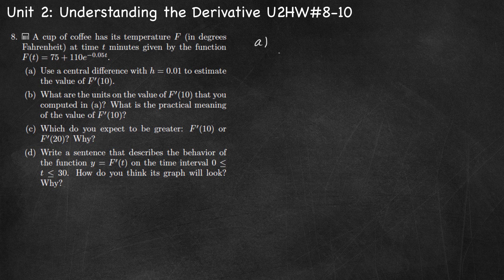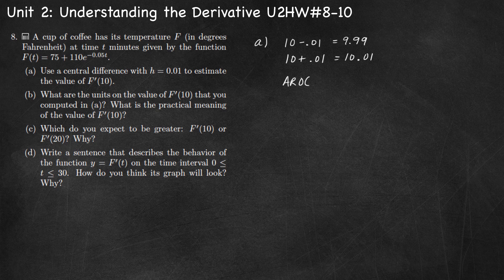To make this a good estimate, we want to choose two points that are really close to 10, so that our average rate of change is approximately equal to our instantaneous rate of change. How close do we want those two points to be? That's our h value. So we're going to use points at 10 minus 0.01 and 10 plus 0.01 — so 10.01 and 9.99 — and find the average rate of change between those two points.